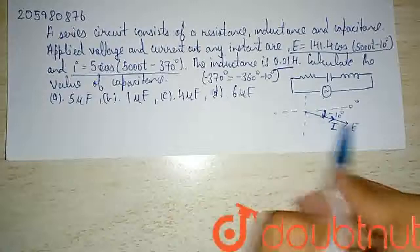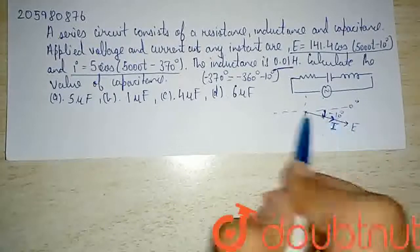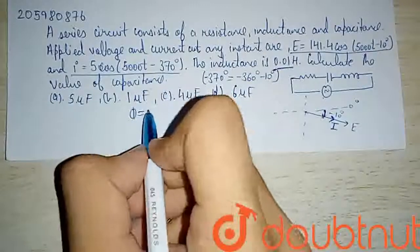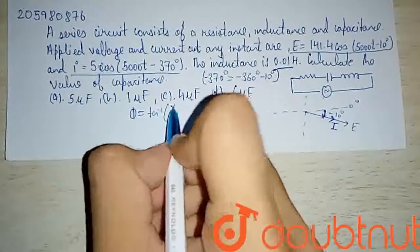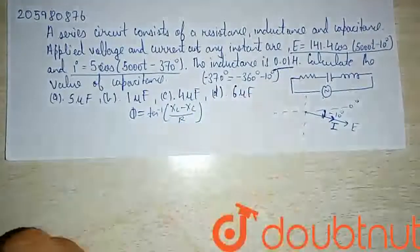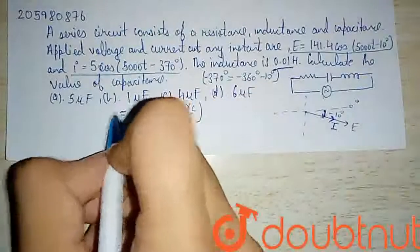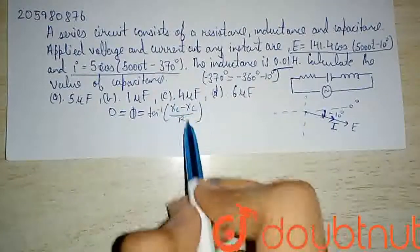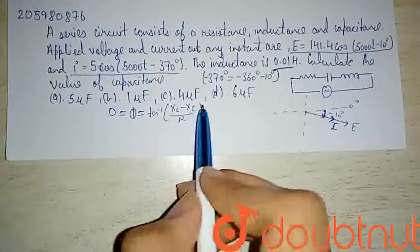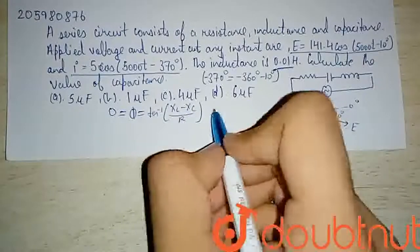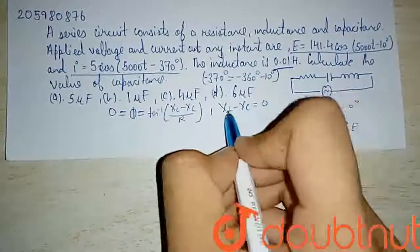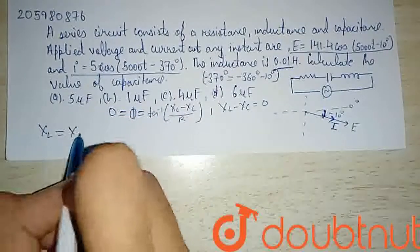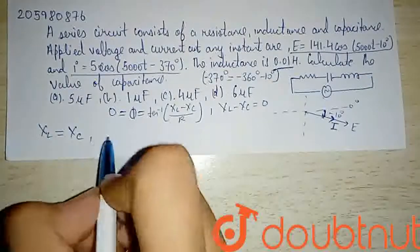Now the formula is tan inverse of (XL minus XC) divided by R. Since phi is 0, if tan inverse equals 0, then XL minus XC divided by R equals 0.